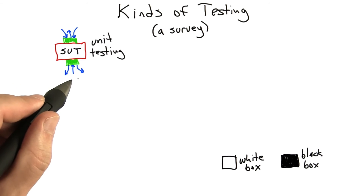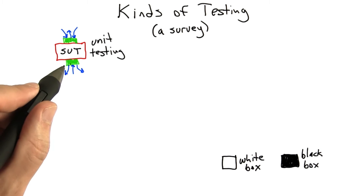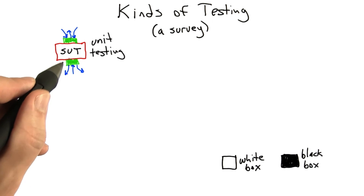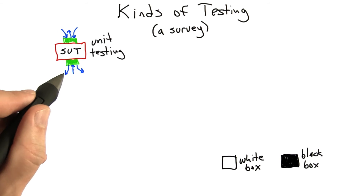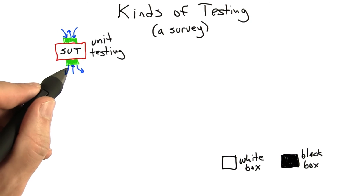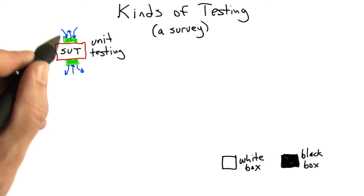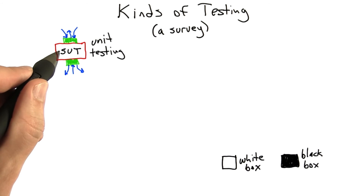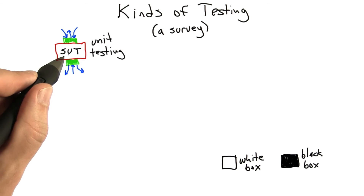Besides the size of the software under test, the other thing that distinguishes unit testing from other kinds of testing is that generally at this level, we have no hypothesis about the patterns of usage of the software under test. In other words, we're going to try to test the unit with inputs from all different parts of its domain. The domain is the set of possible inputs for this piece of software.